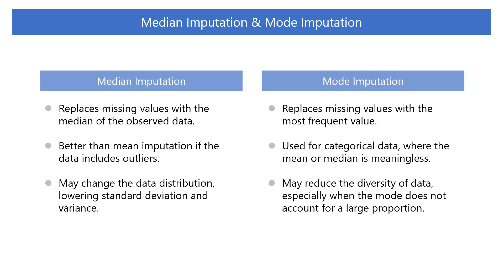We can also use median and mode instead of mean. Median imputation replaces missing values with the median of the observed data. If the data includes outliers, median imputation is better than mean imputation. However, as with mean imputation, it can change the data distribution, lowering standard deviation and variance. Mode imputation replaces missing values with the most frequent value of the observed data. This method is commonly used with categorical data where the mean or median is meaningless. However, especially when the mode does not account for a large proportion of the data, mode imputation may reduce the diversity of the data.